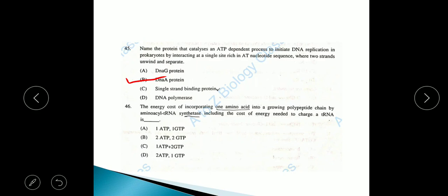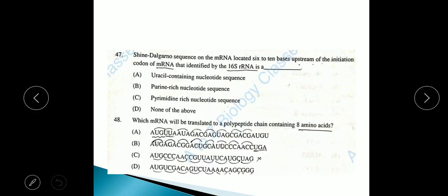Question 46: The energy cost of incorporating 1 amino acid into a growing polypeptide chain by aminoacyl tRNA synthetase, including the cost of energy needed to charge a tRNA, is option B, 2 ATP and 2 GTP. Question 47: Shine-Dalgarno sequence on the mRNA located 6 to 10 bases upstream of the initiation codon of mRNA that is identified by the 16S rRNA is option C, pyrimidine rich nucleotide sequence.